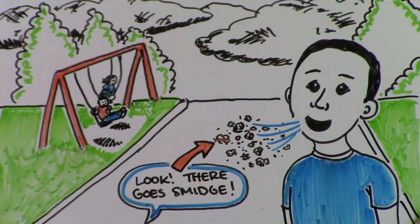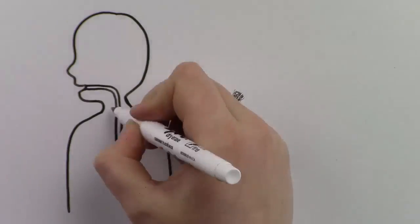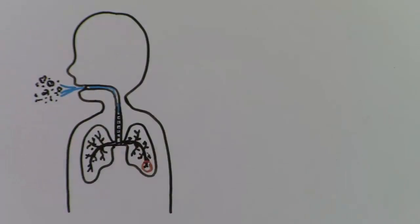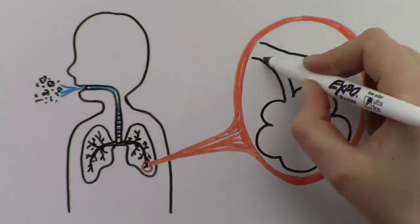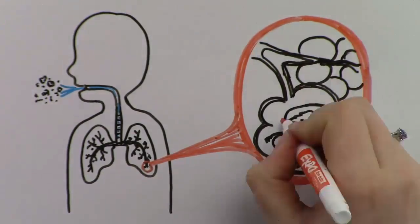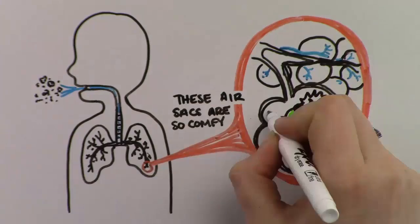Smidge and his team are so tiny they sneak around your body's defenses and get stuck forever in the tiniest corners of your lungs. After Smidge and his clan get comfy in your air sacs, they can cause problems.